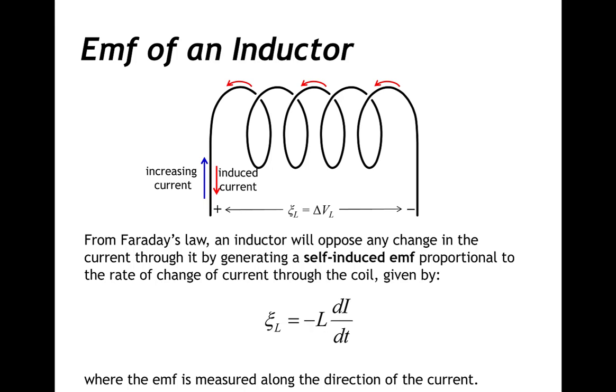From Faraday's law, an inductor will oppose any change in the current through it by generating a self-induced EMF proportional to the rate of change of current through the coil. That self-induced EMF is equal to minus the inductance of the inductor times the time rate of change of the current through the inductor, where the EMF is measured along the direction of the current.